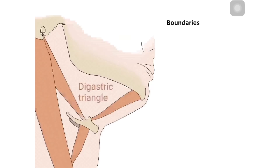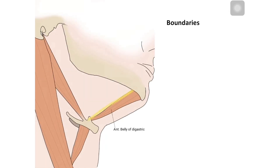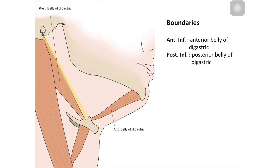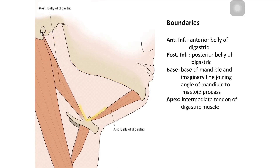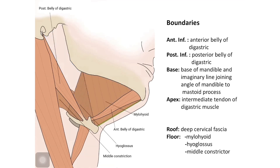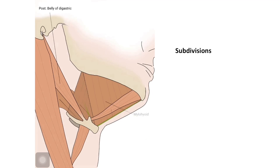Next, the digastric triangle is named because it is bounded on two sides by the anterior and posterior belly of the digastric muscle. The antero-inferior boundary is the anterior belly of digastric, the postero-inferior boundary is the posterior belly of digastric, the base is formed by the base of mandible and the imaginary line joining the angle of mandible to the mastoid process, and the apex is formed by the intermediate tendon of the digastric muscle. The roof is the deep cervical fascia and the floor is formed by three muscles: the mylohyoid, the hyoglossus, and the middle constrictor.